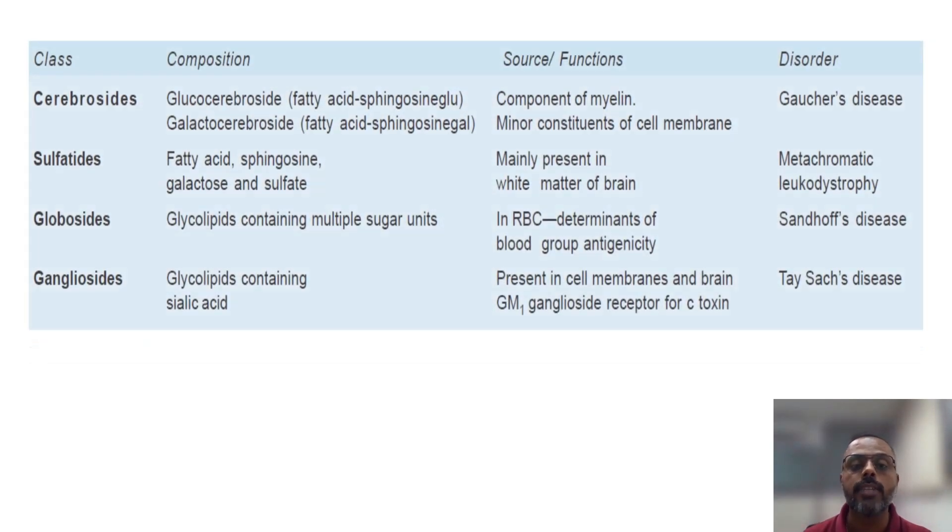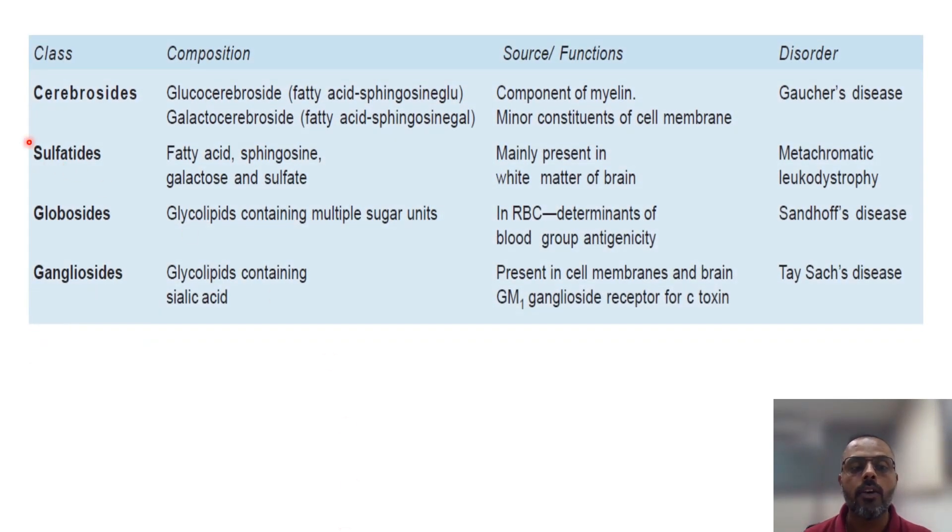Hello everyone. In this video we will quickly summarize or revise glycolipids. Glycolipids are the type of complex lipids which contain carbohydrate as an additional group. The composition of a glycolipid is: a fatty acid, sphingosine as an alcohol, and the third portion is the carbohydrate. There are four types of glycolipids.